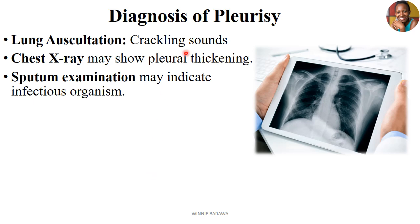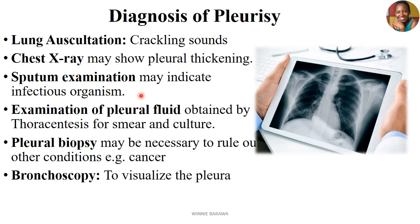When it comes to diagnosis of pleurisy, we look at different approaches. One is lung auscultation using a stethoscope — you will hear crackling sounds. Under a chest X-ray you can see signs of pleural thickening. On sputum examination you can do culture and sensitivity to determine the bacteria causing the pleurisy. There is also examination of pleural fluid through thoracentesis to get a sample for fluid smear and culture. Pleural biopsy can rule out other diseases like cancers or tumors, and bronchoscopy enables visualization of the pleural linings to see where the inflammation is taking place.